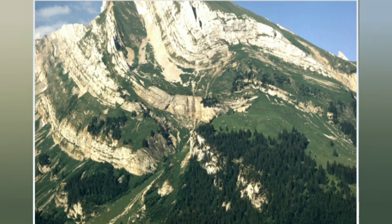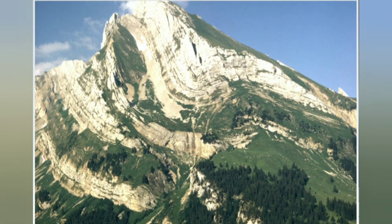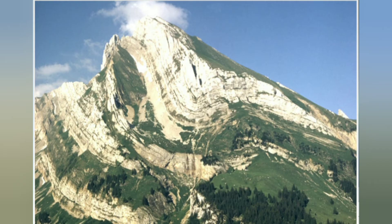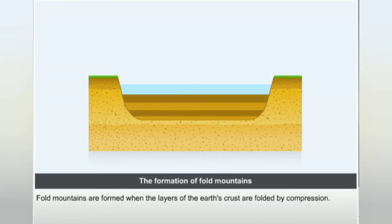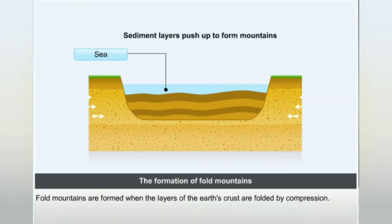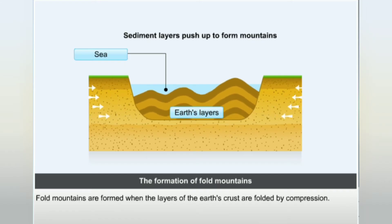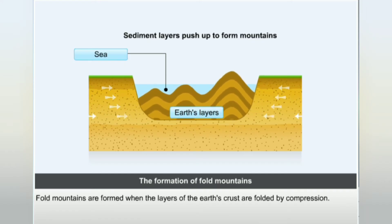Fold mountains are formed when the layers of the earth's crust are folded by compression.